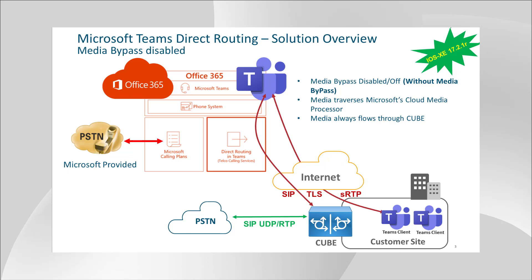In this slide, you can see an overview of Direct Routing architecture with media bypass disabled. A user that is in the corporate network can call PSTN. The media will flow to the cloud and come back to the SBC — it will not stay local to the SBC for PSTN calls. For signaling, the Microsoft SIP proxy talks to the SBC through a TLS connection on port 5061. It is a mutual TLS connection to Office 365, which means there is an exchange of certificates from Microsoft and Kube to establish a secure signaling connection.